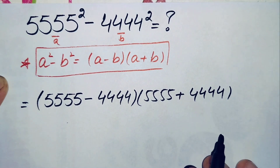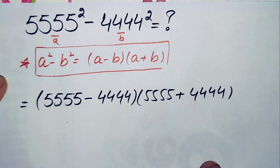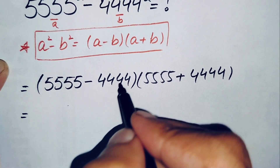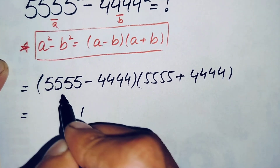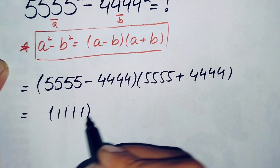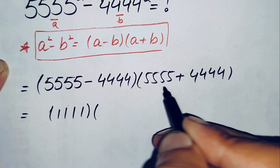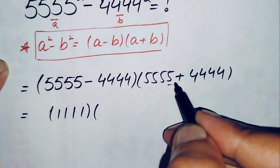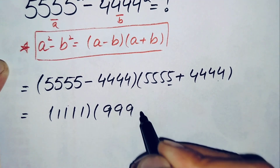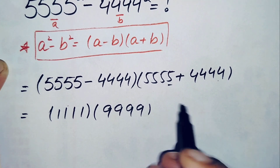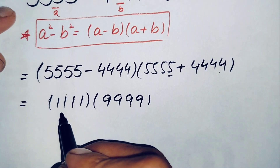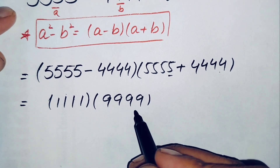Now we subtract and add these two numbers. 5,555 minus 4,444 gives 1,111. And the addition gives 5,555 plus 4,444 equals 9,999. So we have 1,111 times 9,999.